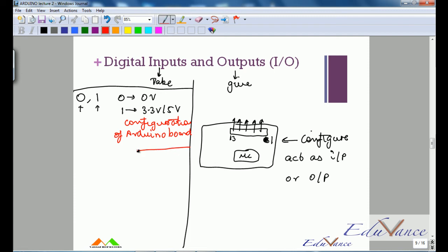However, in terms of current, we need to understand that zero means I am sinking current and one means I am sourcing. Sinking means I am drinking, sourcing means I am giving. Please understand this is from the perspective of outputs.